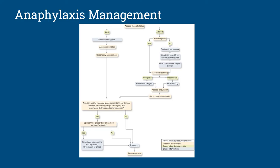For anaphylaxis management, if the patient is alert, administer oxygen, assess circulation by feeling pulses, perform a secondary assessment, look for hives and itching, and administer their prescribed epinephrine. For adults, the dose is 0.3 mg; for infants or children, it is 0.15 mg via IM injection, normally in the thigh muscle. If the patient is altered, access their airway, assess breathing adequacy, and if inadequate — too fast, too slow, or shallow — manage with positive pressure ventilation with supplemental oxygen.